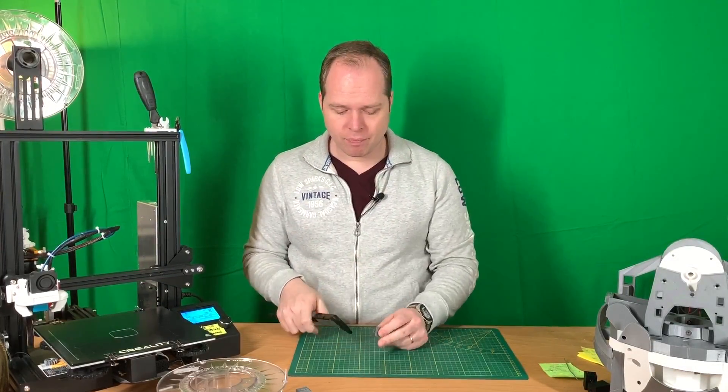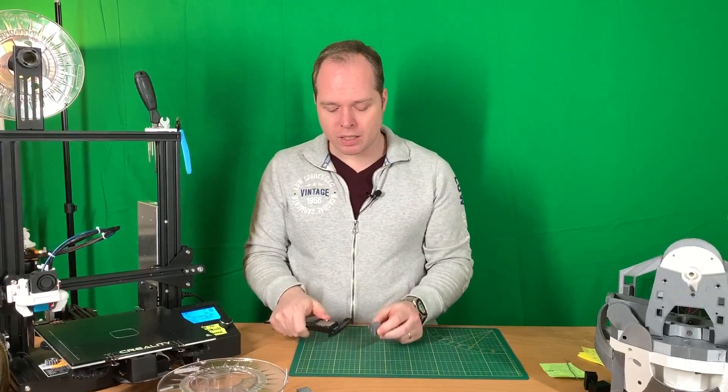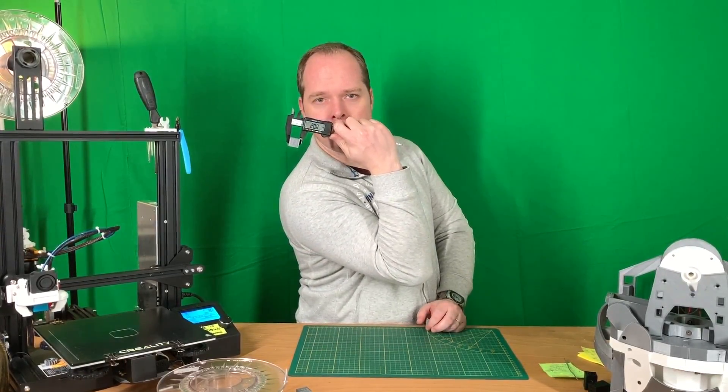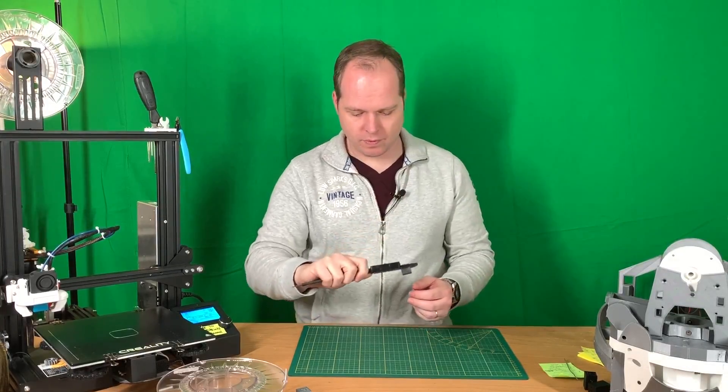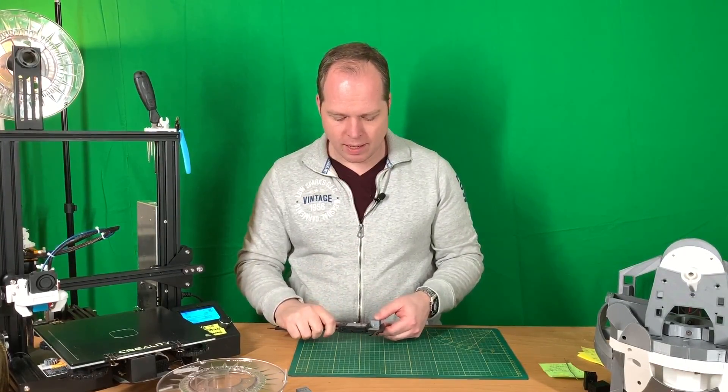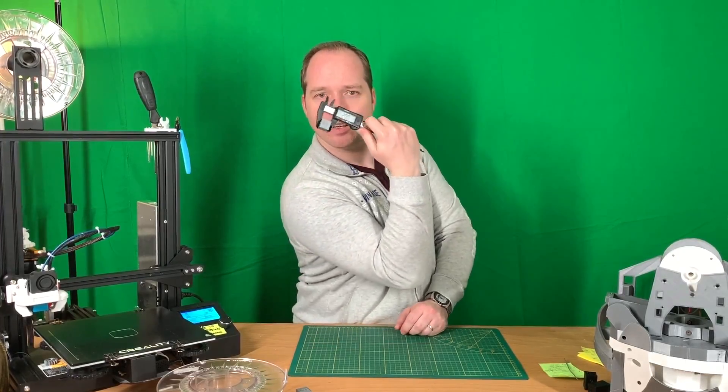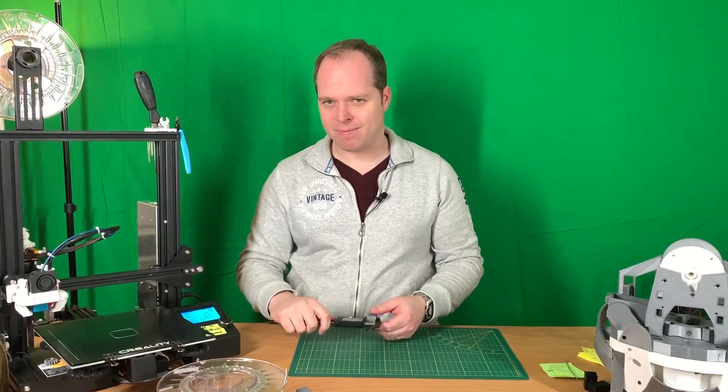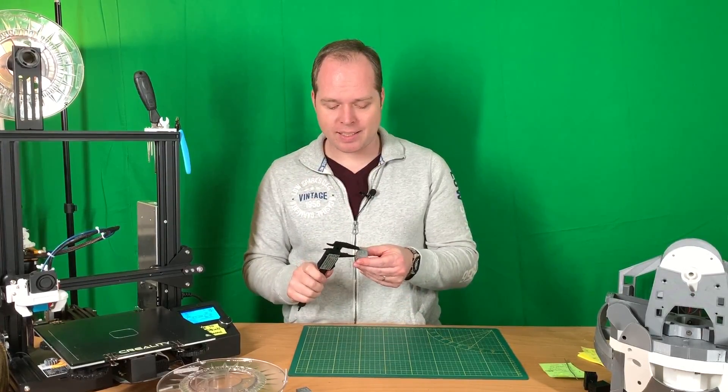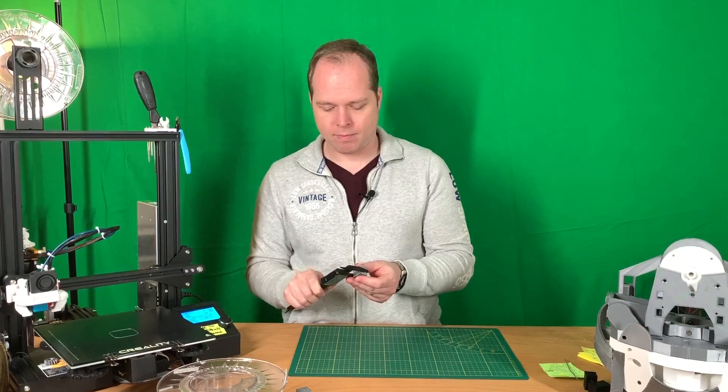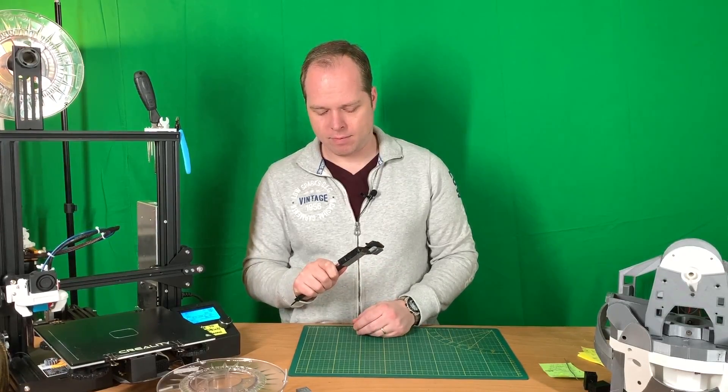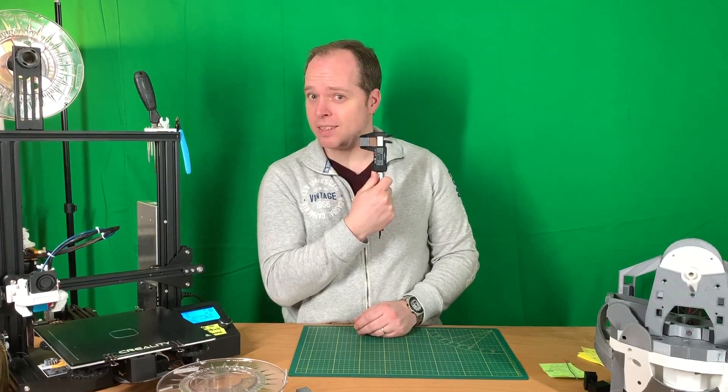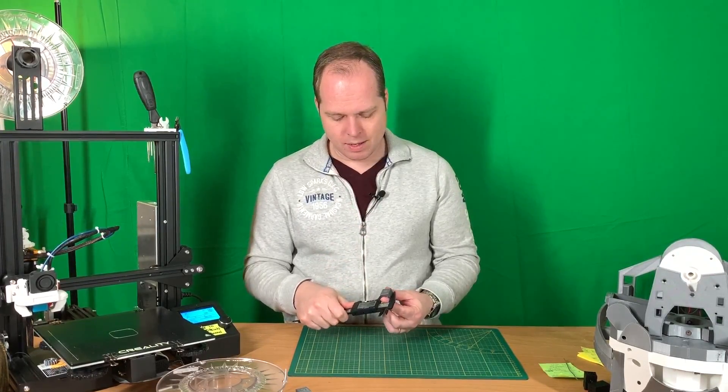So we take the caliper again, we measure the Y-axis, and what do you know, 20.0. The X-axis, 20.0. The Z-axis, 20.0.